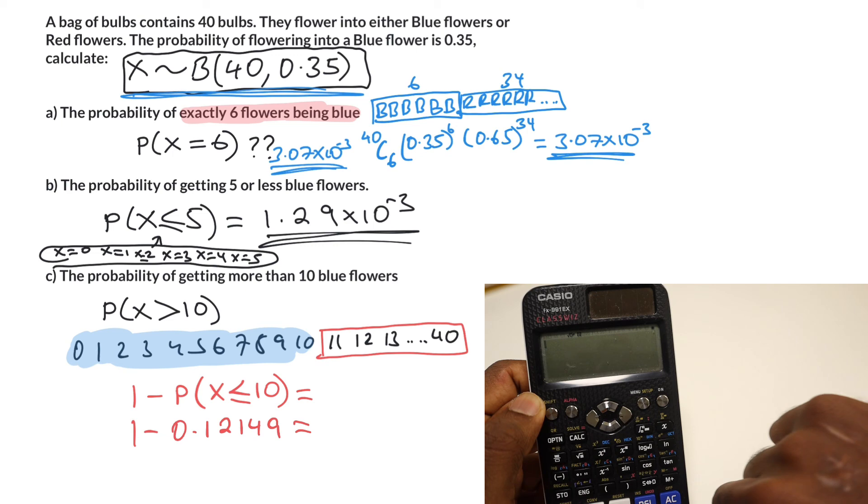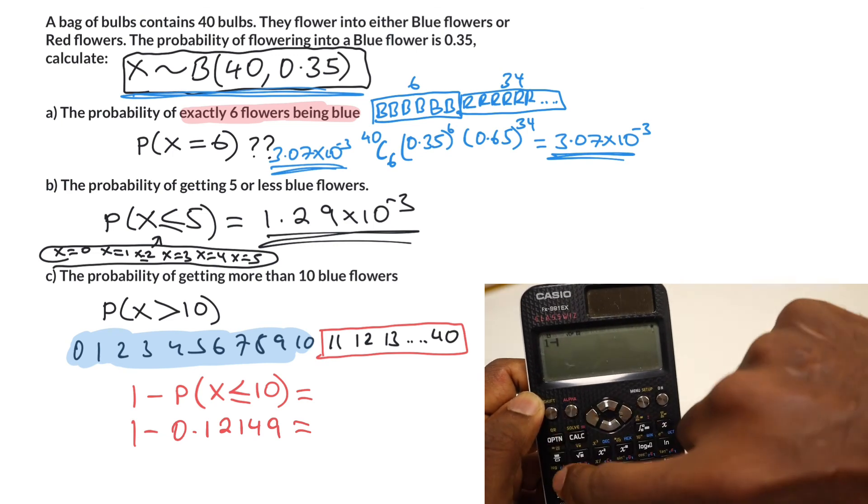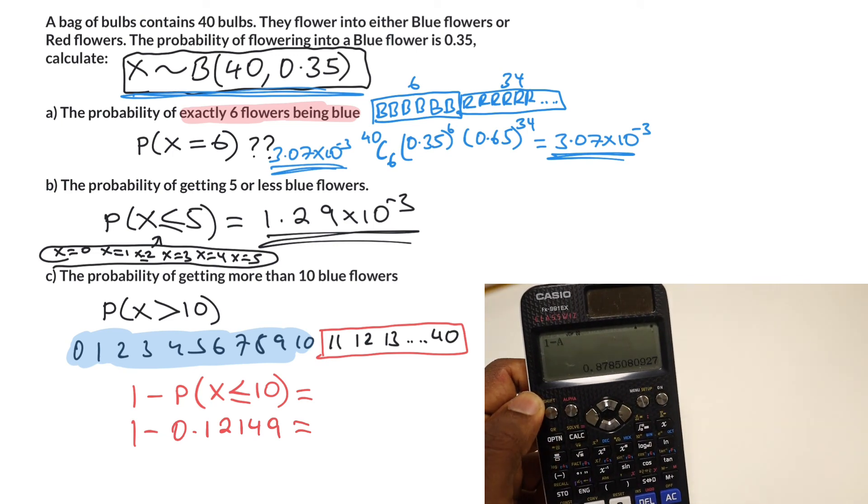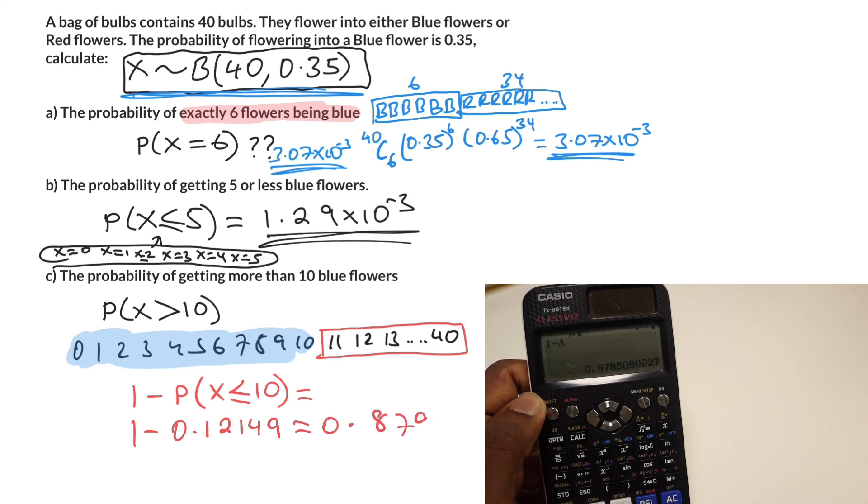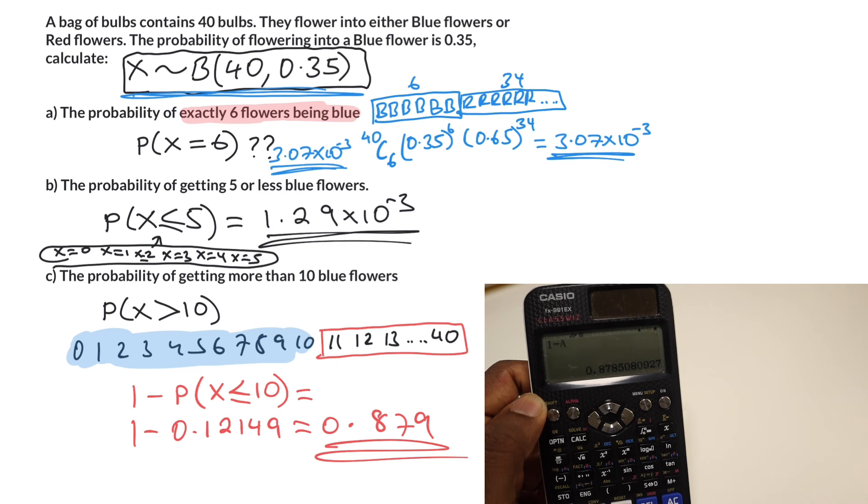1 subtract alpha a, and there's our answer. It'll be 0.879 to three sig figs, and there you go.